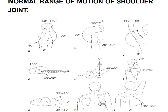This slide shows the normal range of motion of the shoulder joint. Shoulder flexion is 0 to 180 degrees, or 150 to 170 degrees; extension is 40 degrees. Abduction is 180 degrees and adduction is 20 to 40 degrees. It is also showing the abduction range, and in supine lying, adduction is 135 degrees.